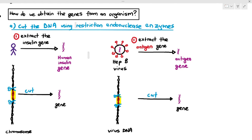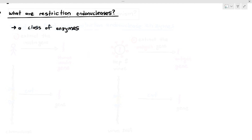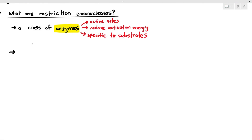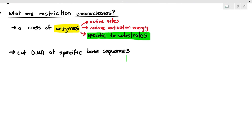What exactly is this restriction endonuclease enzyme all about? It's a class of enzymes — a type of enzyme that has its own active site. They reduce activation energy, and they are specific to substrates. The important thing to understand about restriction endonucleases is the fact that they can cut the DNA at a specific base sequence. That specific base sequence is exactly what the substrate is.